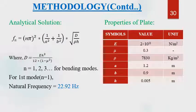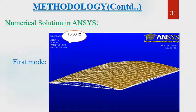Theoretically, the natural frequency of the plate was determined using the governing equation by substituting the values of plate properties, and the first natural frequency came out to be 22.92 Hz. Numerical analysis was also done using ANSYS with the Solid 45 element. The plate was plotted and meshed in ANSYS, and modal analysis was performed. The first natural frequency came out to be 30.38 Hz, and the mode shape is as shown in the figure.